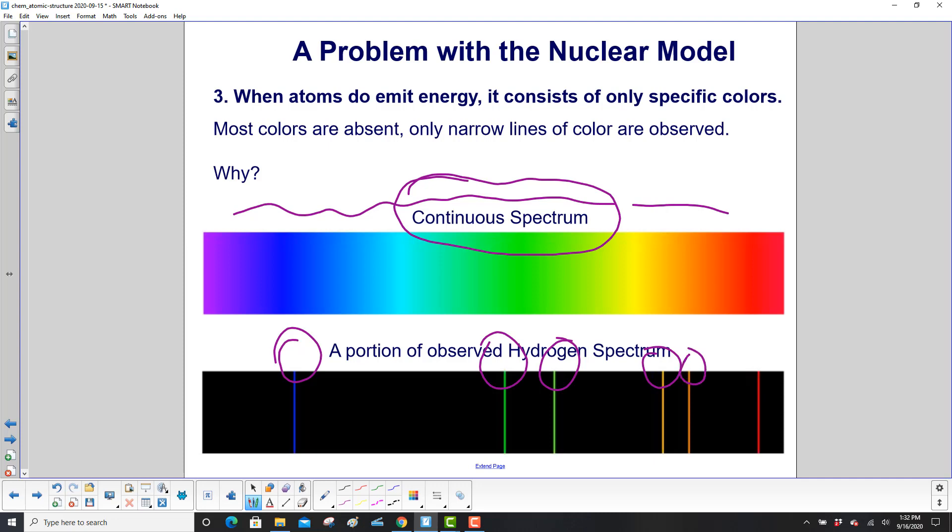it only emits - this one has one, two, three, four, five lines. And of course, they have different colors matching the continuous spectrum. But you only have five very narrow lines that are being emitted.